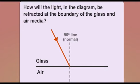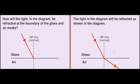Try to answer this question: how will the light in the diagram be refracted at the boundary of the glass and air media? The light will be refracted away from the normal. This is because glass is optically more dense than air. Therefore, when light travels from glass to air, its speed increases and it is refracted away from the normal.